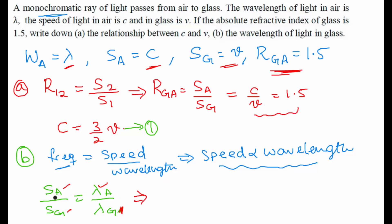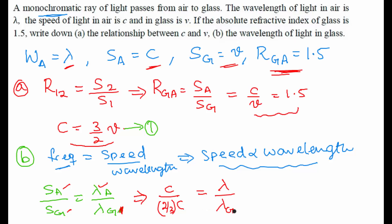Let's substitute these values. Speed in air is c, and speed in glass is 2/3 c — from equation 1. So we can write: 2/3 times c equals lambda divided by the wavelength in glass, which is unknown. We can cancel c from both sides.